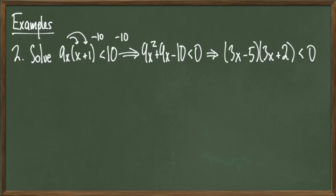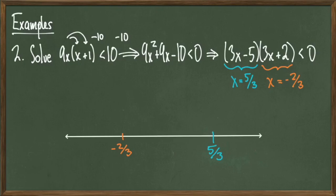My next step is to find the roots of this polynomial. They turn out to be x = 5/3 and x = -2/3. I place those roots on the number line and invoke the test point method — picking points around and between these roots. The goal is to find which x values make the polynomial less than 0. The number of test points is always one more than the number of roots, so with 2 roots I pick 3 test points: 0, -1, and 2.